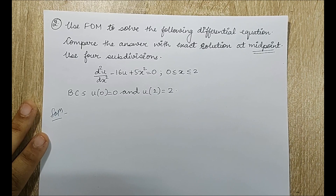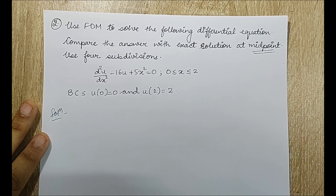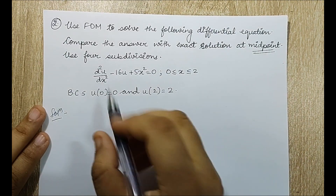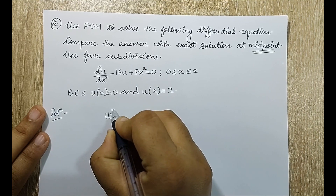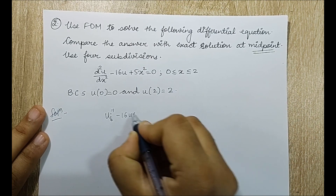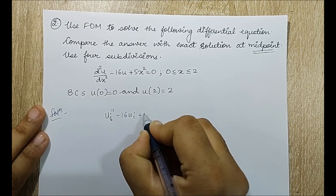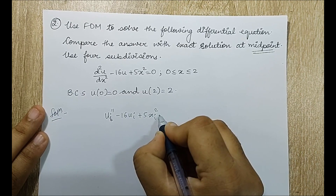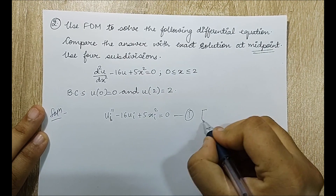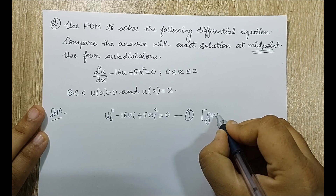Note that in the first problem I was solving, y is a function of x; here u is a function of x, so while solving, write the variable correctly. I first write down the equation in the form: u_i double-dash minus 16·u_i plus 5·x_i² = 0. This is my first equation.